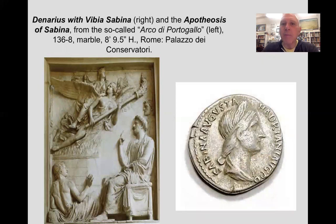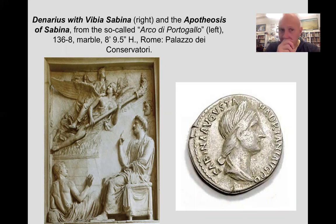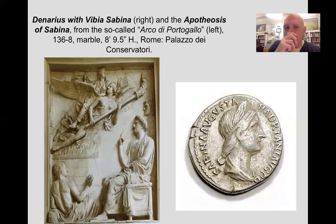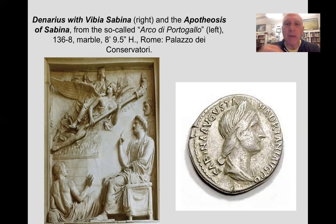There's this wonderful relief that comes from the Arco di Portogallo, a monument in Rome that has been dismantled, but we have some of the relief sculpture from that. What you see there on the left is the apotheosis of Sabina — she's been carried up after her death to the heavens by a winged victory-like figure holding a torch representing the essence of her life. On her back is a seated figure of the Empress Sabina, viewed by her mourning husband Hadrian, the seated figure there on the right. There are likewise a number of coins with her portrait and likeness as well.